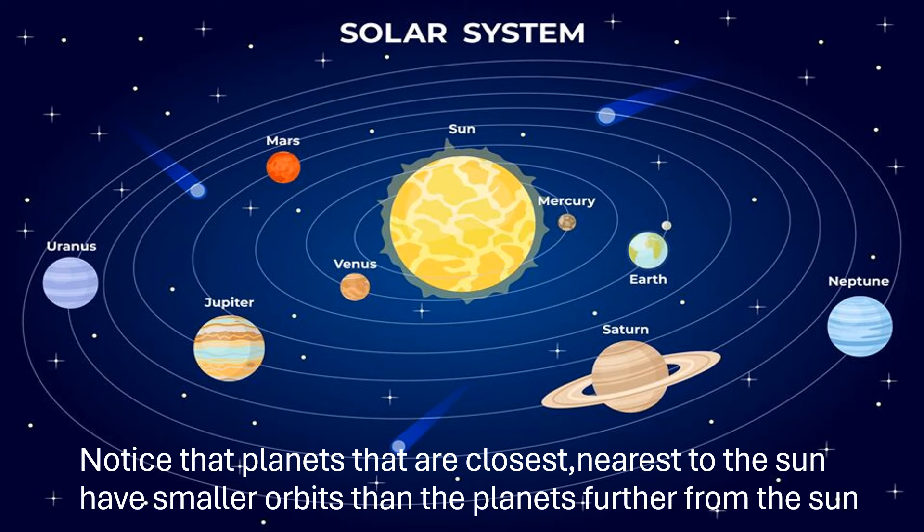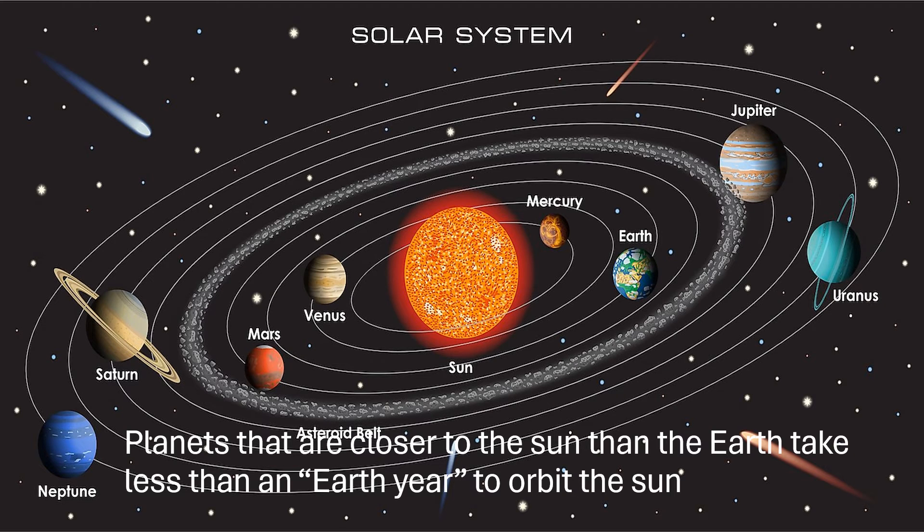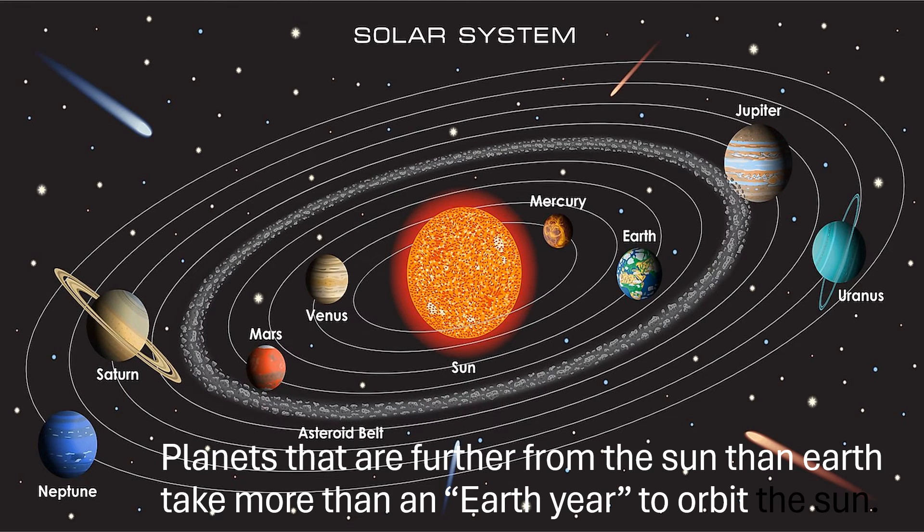Notice that planets that are closest, nearest to the sun, have smaller orbits than the planets further from the sun. Planets that are closer to the sun than the earth take less than an earth year to orbit the sun. Planets that are further from the sun than earth take more than an earth year to orbit the sun.